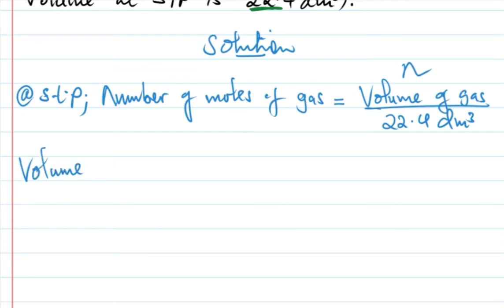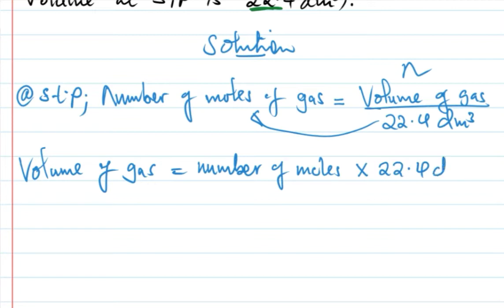Volume of gas equals number of moles multiplied by 22.4 dm³. First, we need to calculate the number of moles of hydrochloric acid.